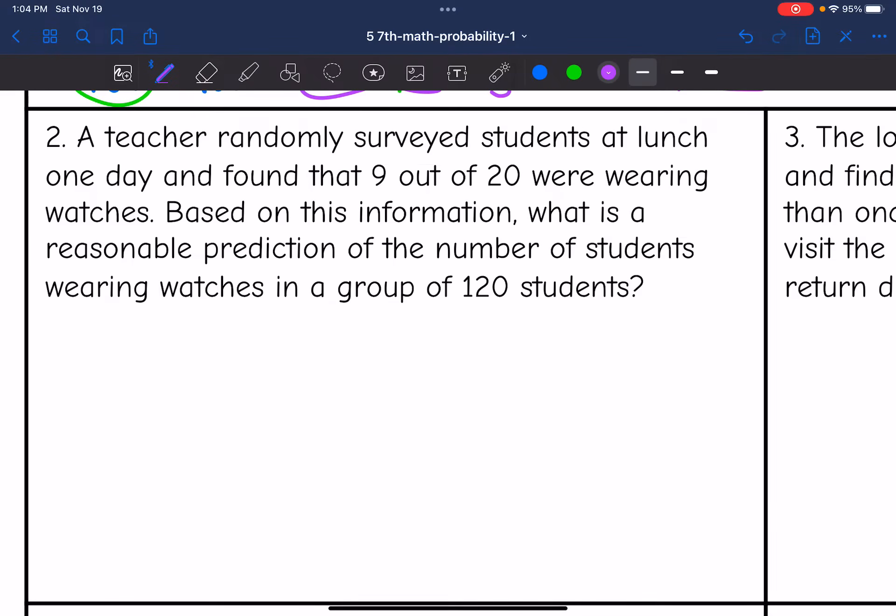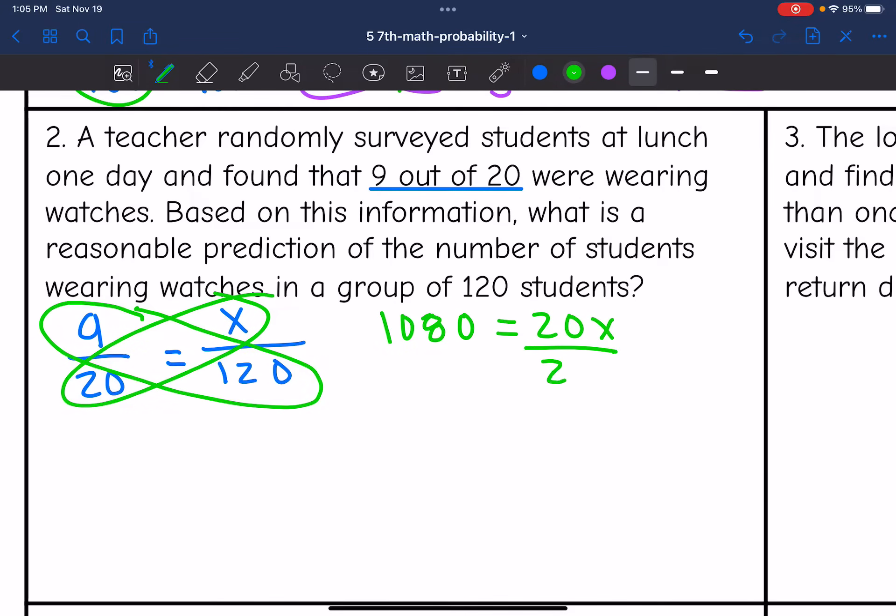All right, let's look at number two. A teacher randomly surveyed students at lunch one day and found that 9 out of 20 were wearing watches. Based on this information, what is a reasonable prediction of the number of students wearing watches in a group of 120 students? So we know that based on the students that the teacher surveyed, 9 out of 20 were wearing watches. And we want to know how many out of 120 students would be predicted to wear watches based off of that survey. So now let's cross multiply to solve. 9 times 120 is 1,080. And then 20 times x is 20x. And then I would divide by 20. So we would expect 54 students to be wearing watches out of 120 based on the teacher's survey.